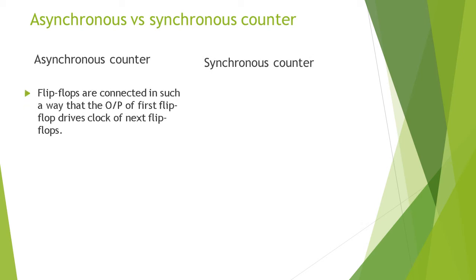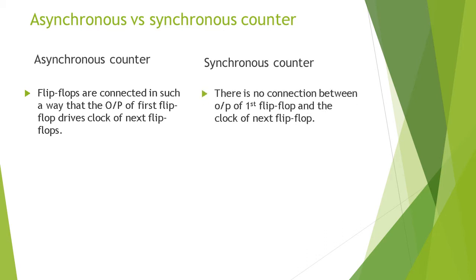In case of asynchronous counter, flip-flops are connected in such a way that the output of the first flip-flop drives the clock of the next flip-flop. It means that the clock given to the next flip-flop is the output of the first flip-flop. But in case of synchronous counter, there is no connection between the output of the first flip-flop and the clock of the next flip-flop — we give a separate clock to each individual flip-flop.